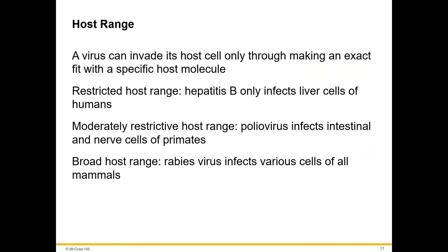A virus can invade its host cell only by making an exact fit with a specific host molecule — it's a restricted host range. For example, Hepatitis B only infects liver cells of humans. A moderately restrictive host range: poliovirus can infect intestinal and nerve cells of primates. A broad host range: rabies virus can infect various cells of all mammals.